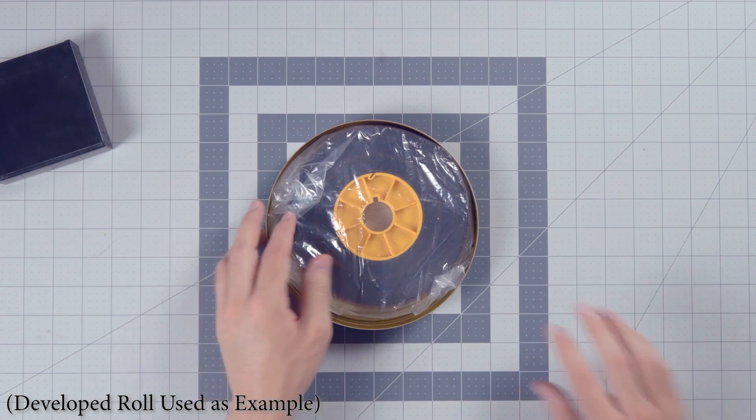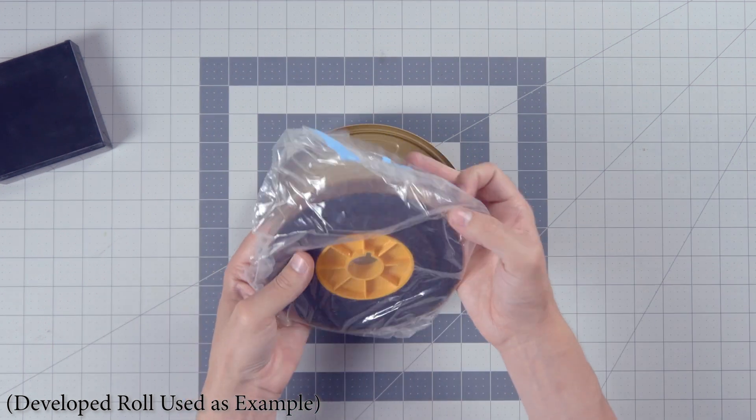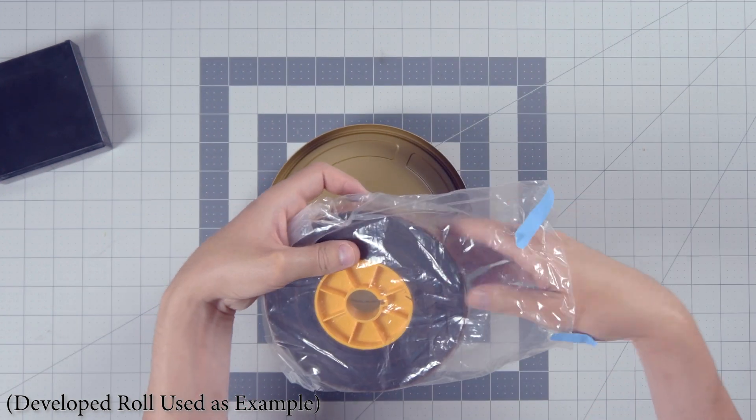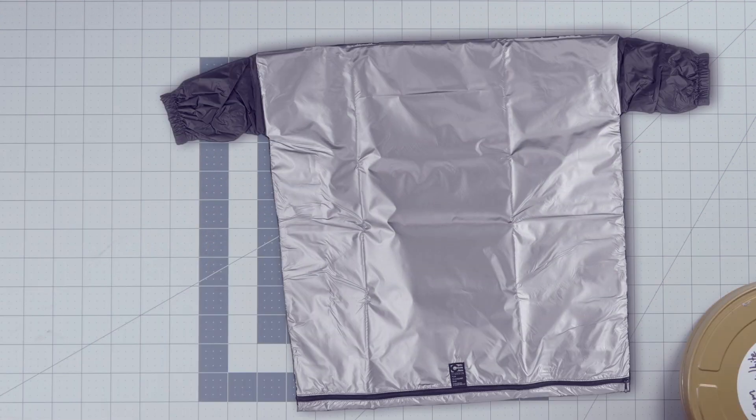400 foot rollers come in film canisters. These metal canisters hold 400 feet of 16mm film, and you have to absolutely handle this stuff in complete darkness. It's got to be a darkroom or a dark bag or a changing tent. It's got to be light tight.